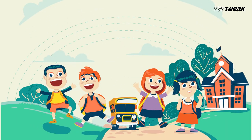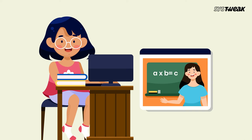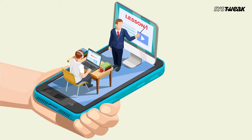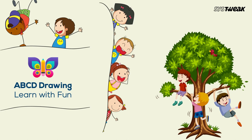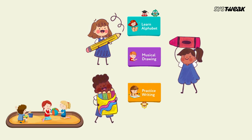Since most schools and education institutions have switched to online learning, there is a major rise in mobile applications that facilitate or offer online learning. Systweek too have introduced ABCD Drawing, a fun app that helps your kids under 5 years of age to draw and color alongside learning the alphabet and numbers. So let's see how this app works.